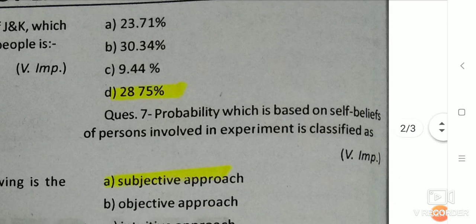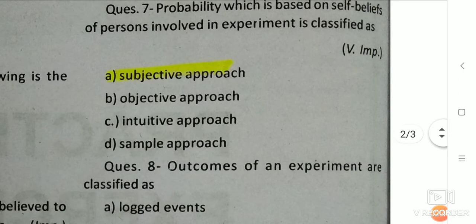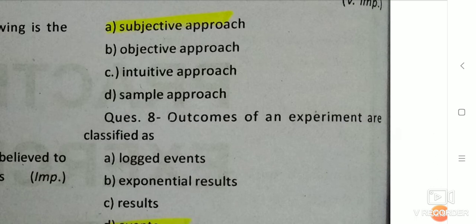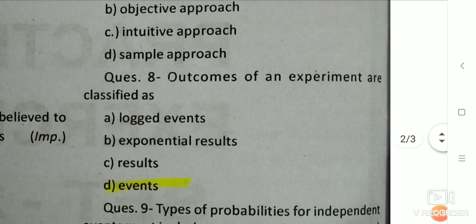Q6: Probability which is based on self-beliefs of persons involved in an experiment is classified as — the right answer is the subjective approach. Q7: Outcomes of an experiment are classified as — the right answer is Events.